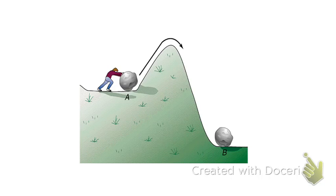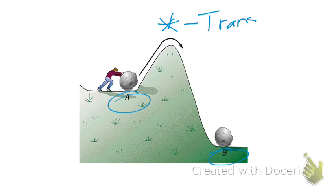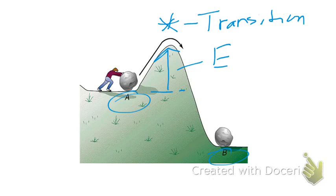Think of it like a guy trying to push a boulder from point A, up over a hill, and down to point B. The hill's peak is the transition state. In order to get the boulder from A to B, it has to reach that transition state, requiring an additional amount of energy — that is the activation energy. The guy pushes the boulder up to that transition point with the appropriate energy to get there, then lets it go.